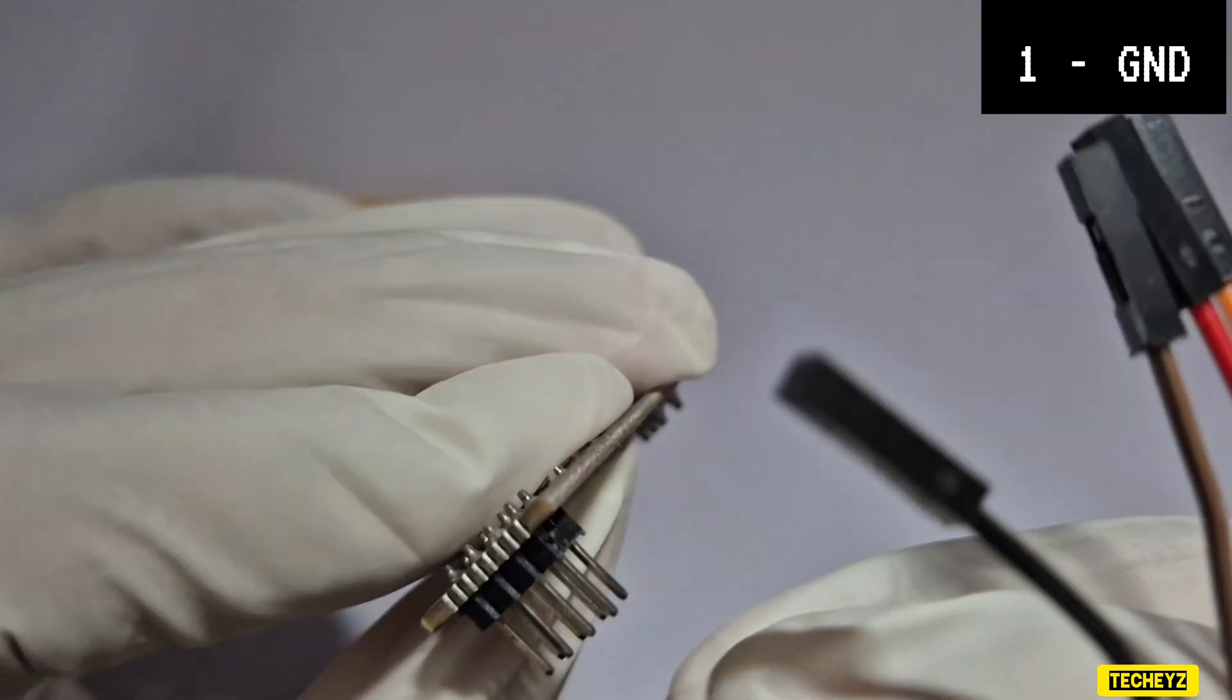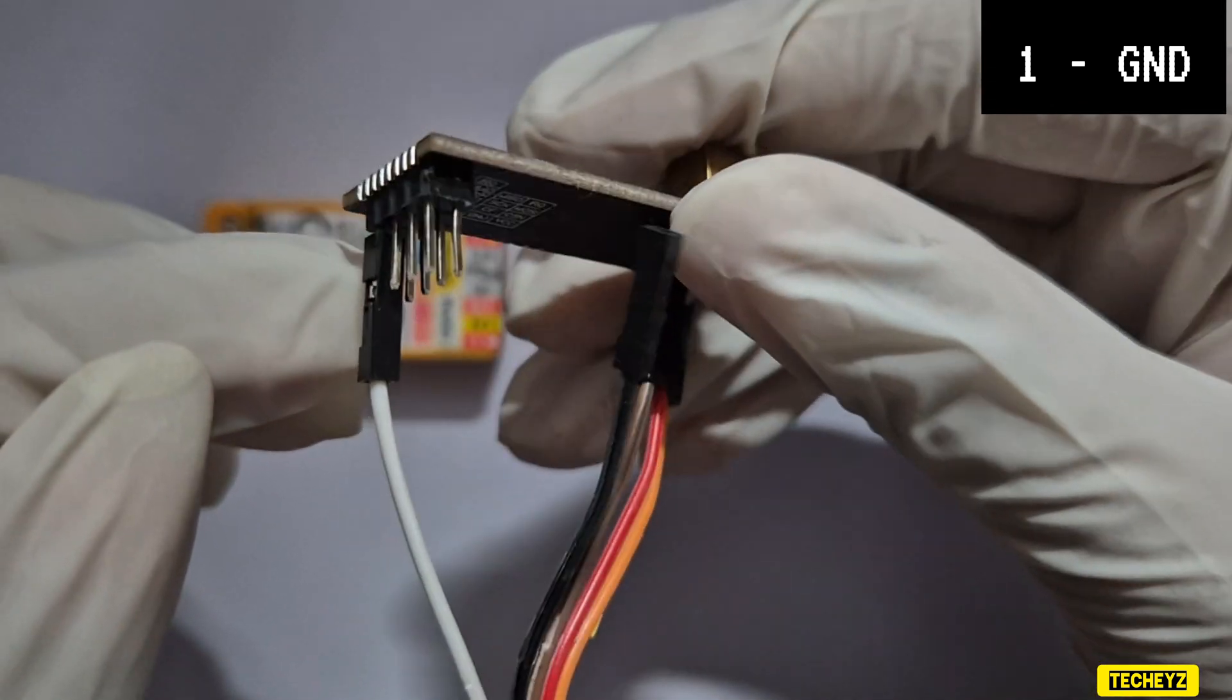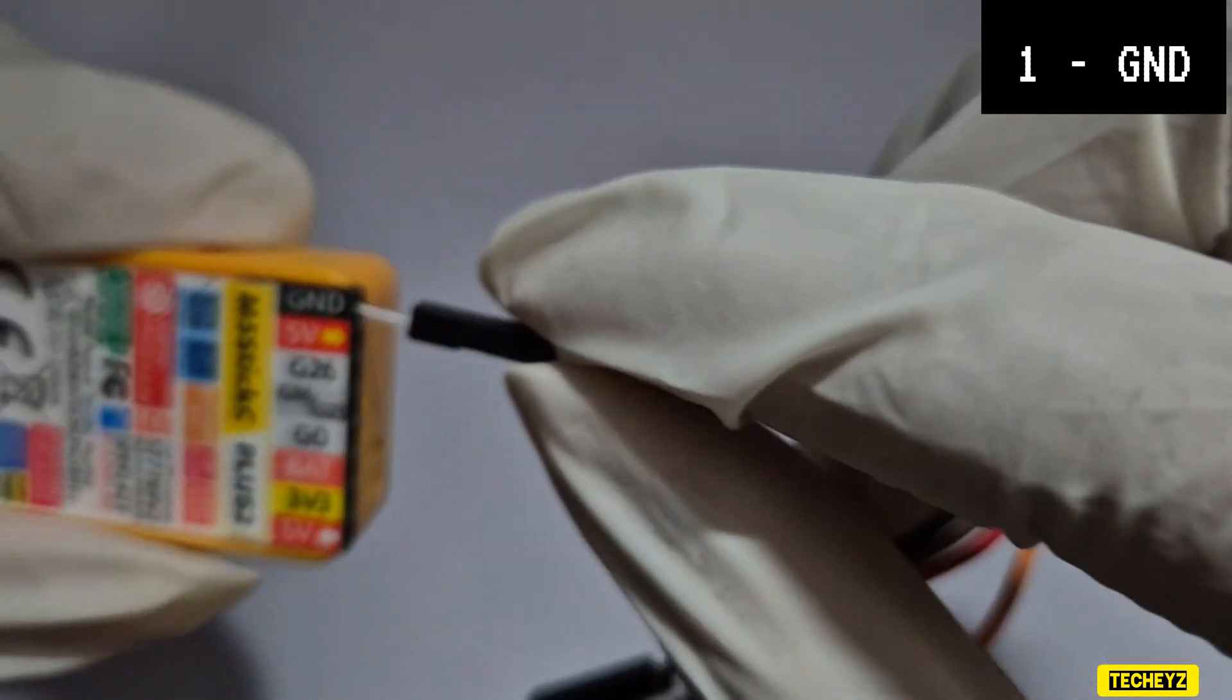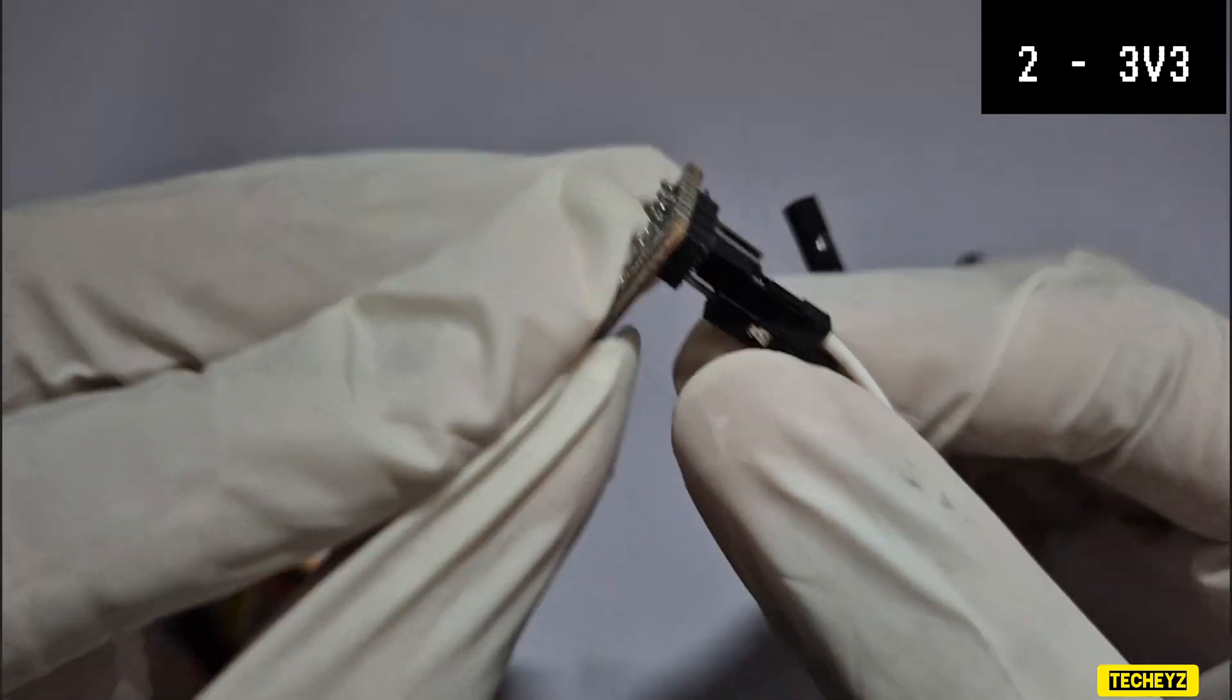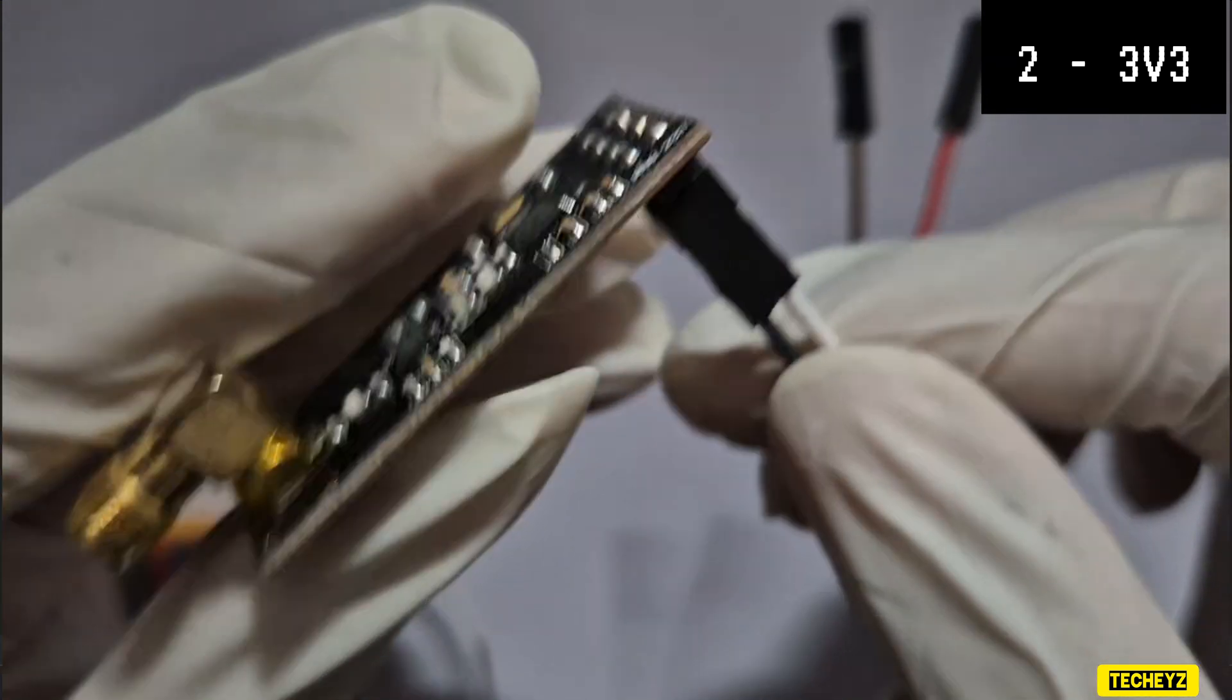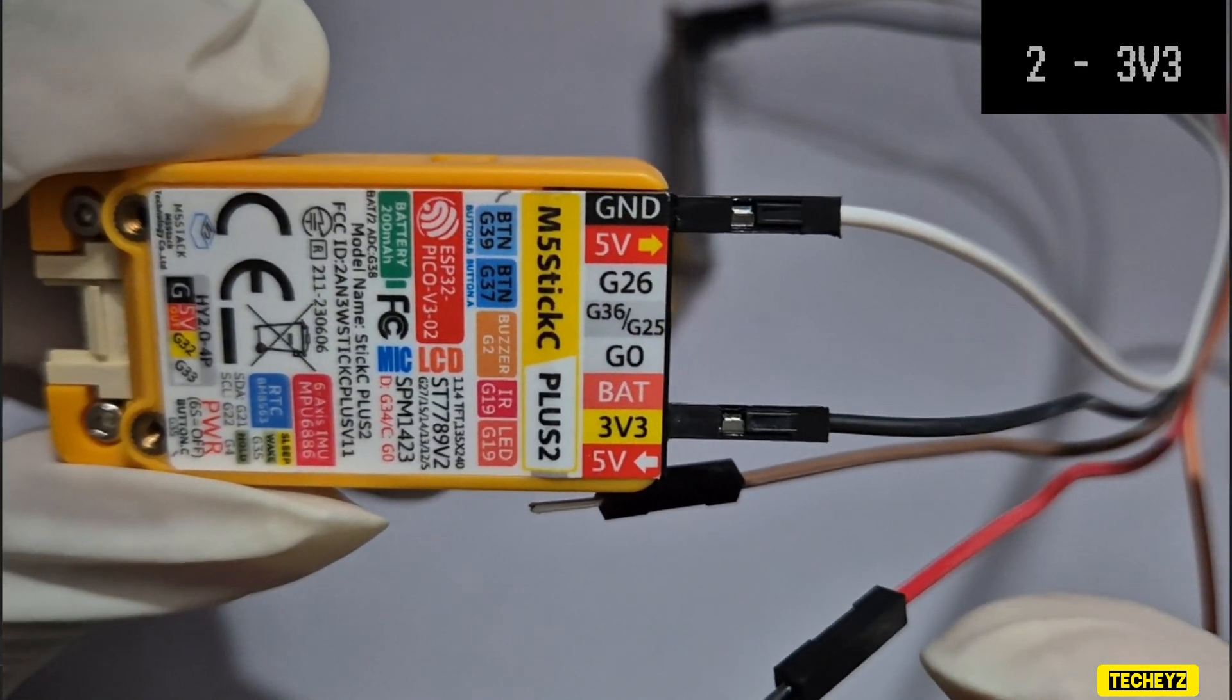So I will take my first wire and connect to pin 1, the white color wire. Since it's a male to female wire, we have connected the female end. Now I will take the male end and connect it to GND, the ground. Similarly I will be connecting all the wires. I will take the second wire and connect it to pin 2 which is on the opposite of pin 1, and then that will be connected to the 3v3 port.